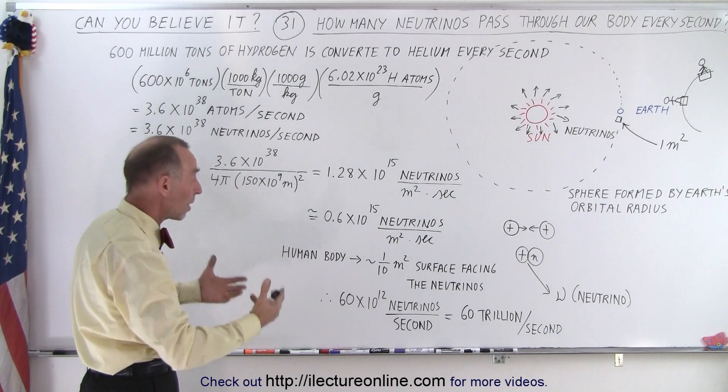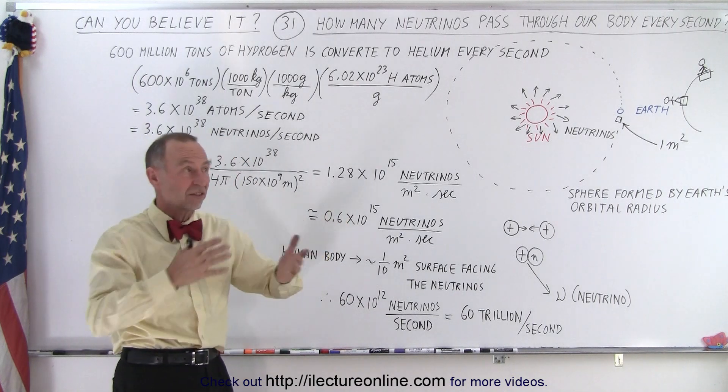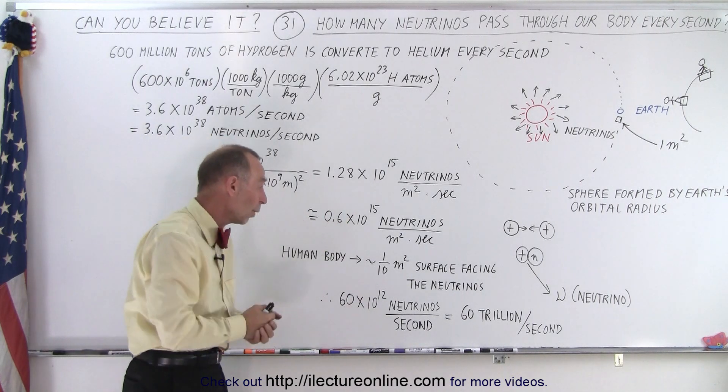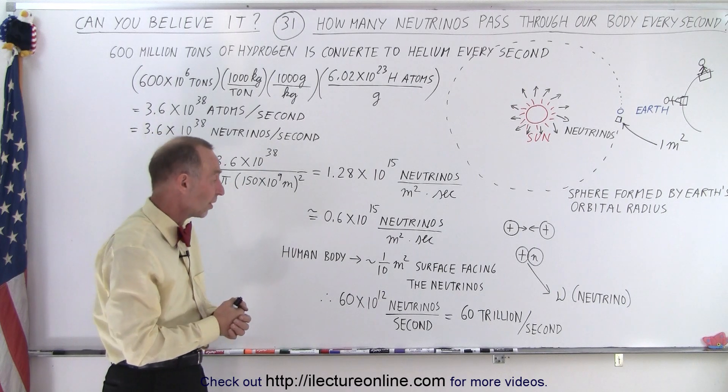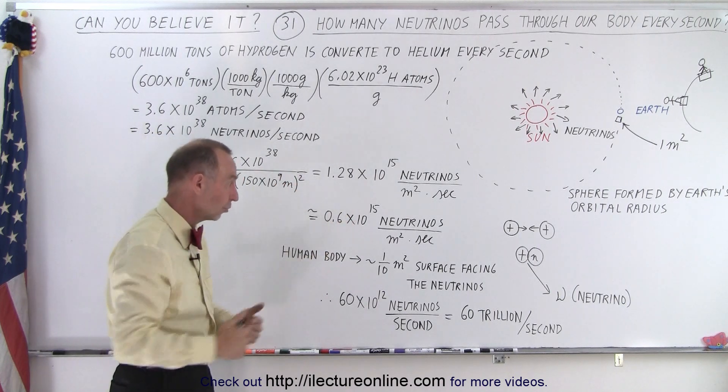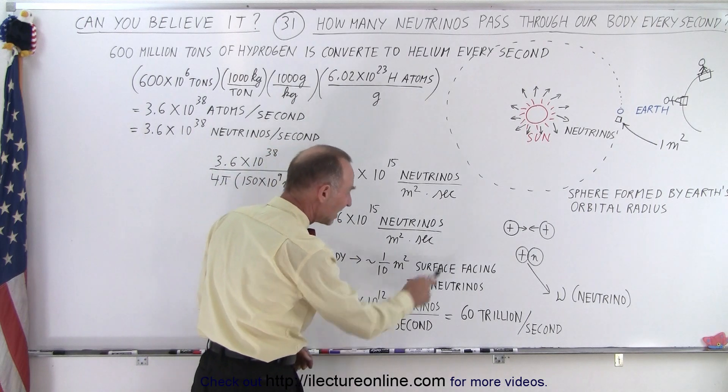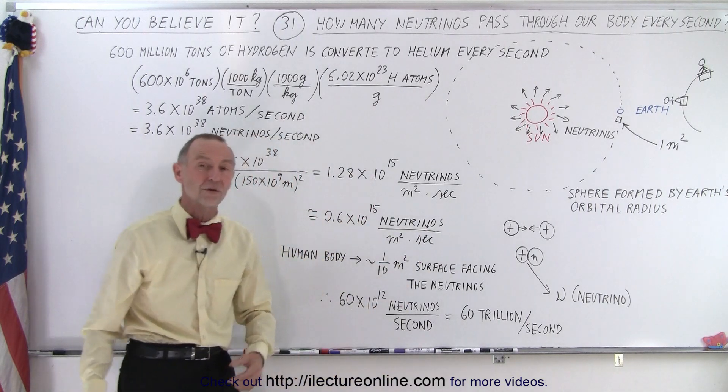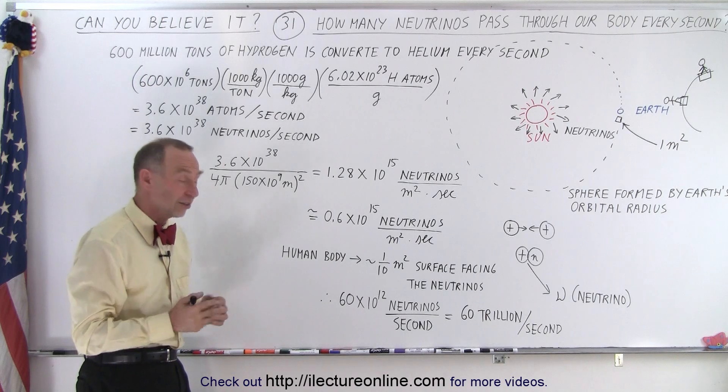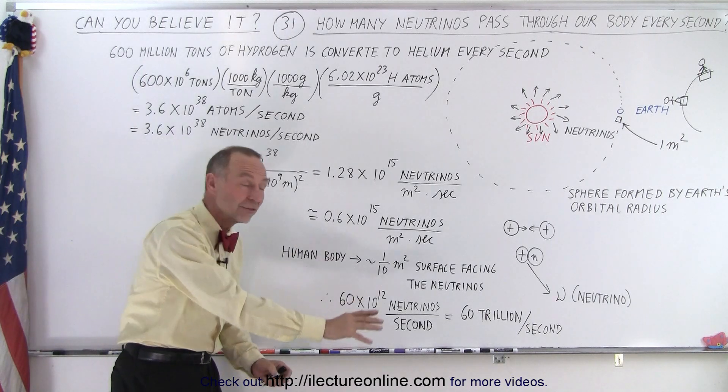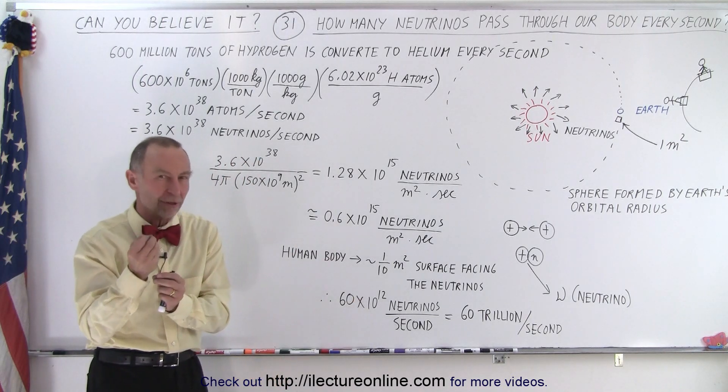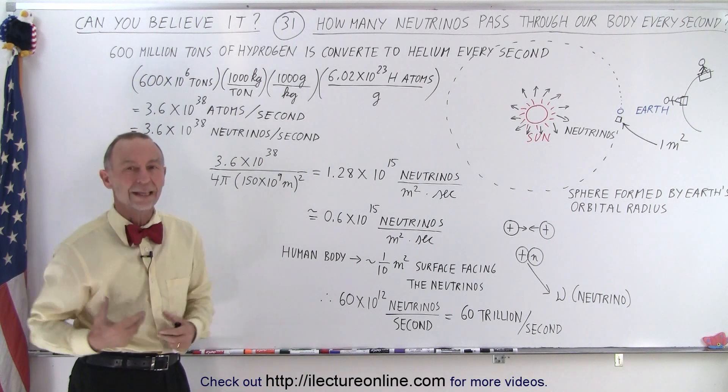And then saying that the human body facing the Sun like that is potentially 1 tenth of a square meter in surface area that would then be exposed to those neutrinos. Divide that number by 10 and we end up with 60 trillion neutrinos that strike us every single second and they go right through us with virtually none of them interacting with anything inside our bodies.